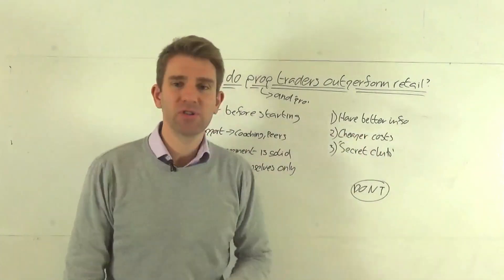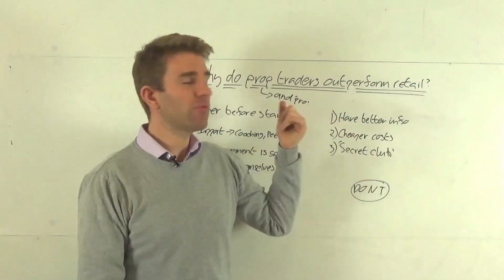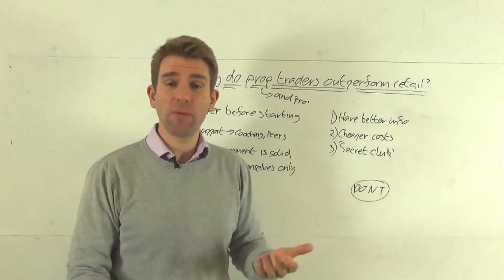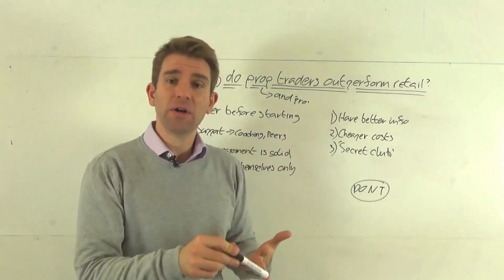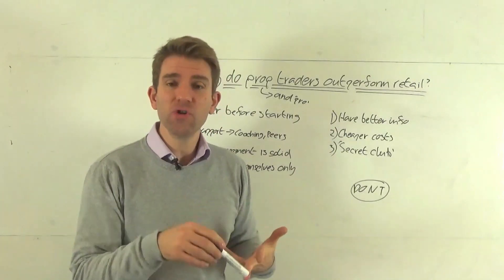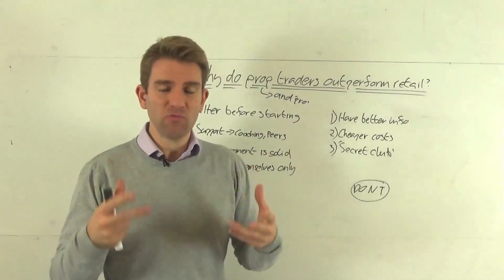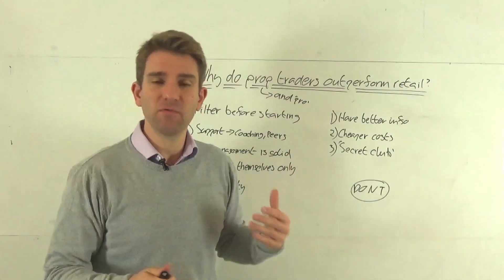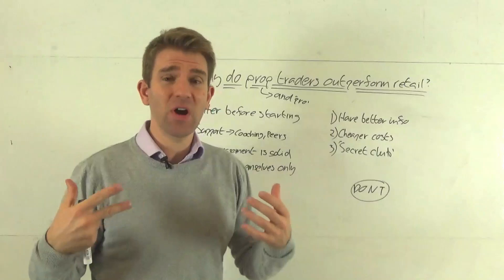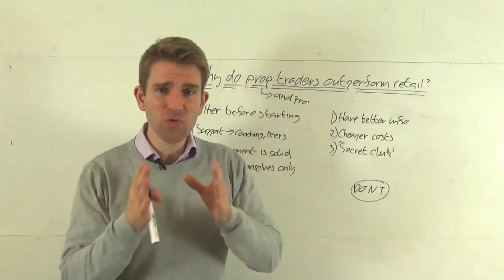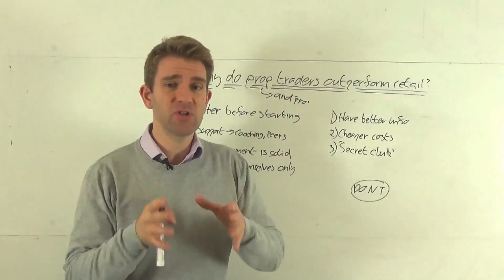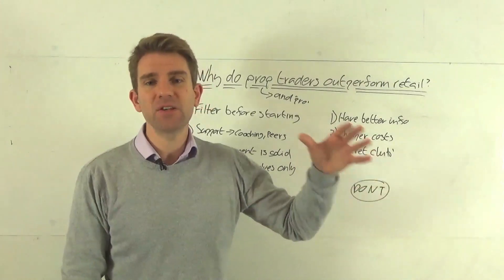Two, they've got cheaper costs. Now, this might be true, but generally in prop, it's actually the opposite is true. In prop, most of the time, these guys have got a desk fee. These guys have got commissions that, yes, they are reduced, but they're not massively reduced that it makes it impossible for retail to be profitable. We are the best time ever to be trading, guys. Commissions or spreads, however you're trading it, are so, so low. The barrier to entry is so low. Data feeds are so cheap. Charting packages are so cheap.